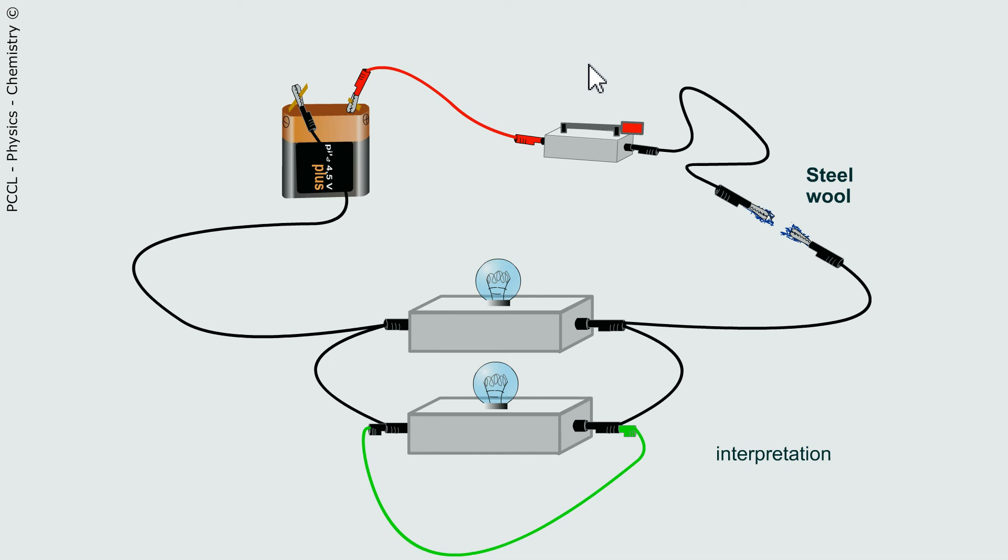The steel wool has burnt and no light bulb shown. We will seek to interpret: there are two bypass bulbs and a wire that shorts one of the two bulbs.